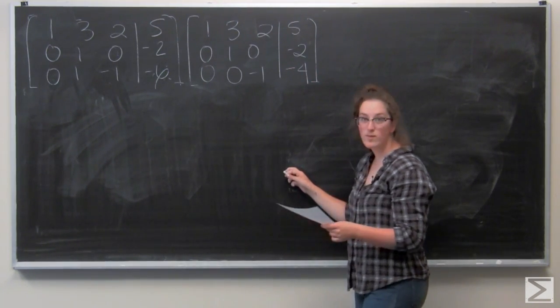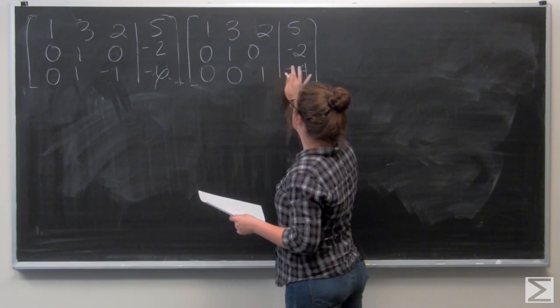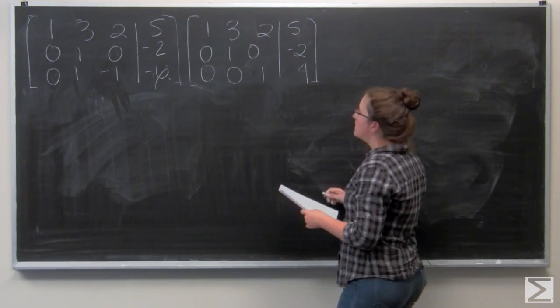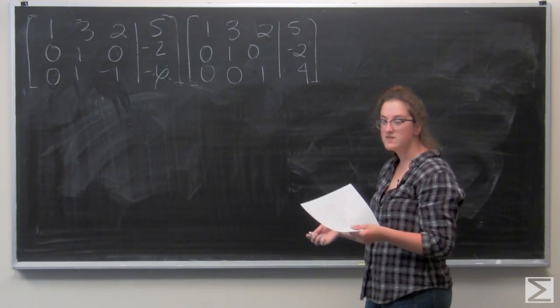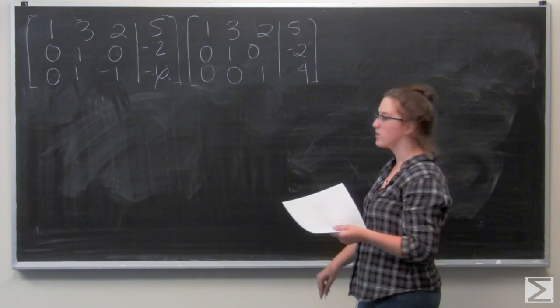And I just want to multiply that third row by negative 1. So I can identify x2 and x3. They are negative 2 and 4 respectively.